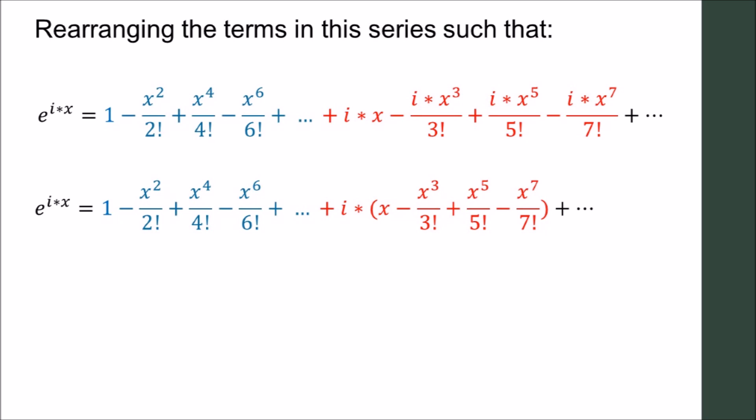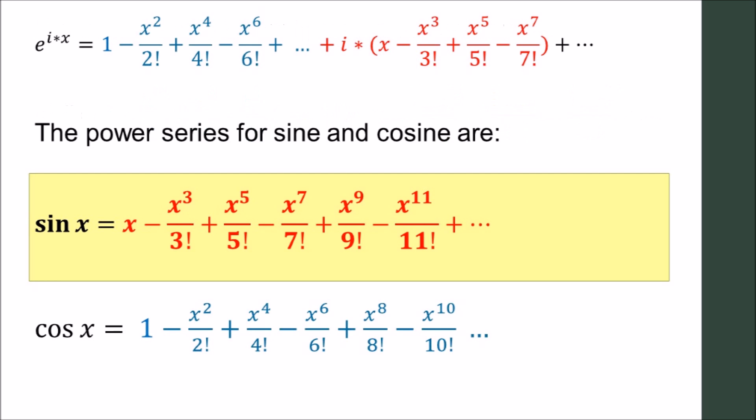If you took calculus, the separated collections should look familiar. The power series for sine is x minus x cubed over 3 factorial plus x to the 5th power over 5 factorial minus x to the 7th power over 7 factorial, and so on. And it is shown in red on this slide.